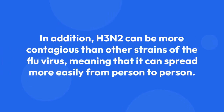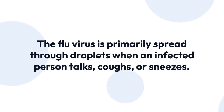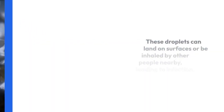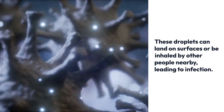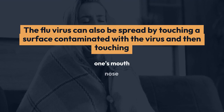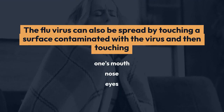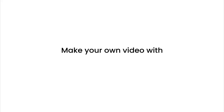In addition, H3N2 can be more contagious than other strains of the flu virus, meaning that it can spread more easily from person to person. This can lead to more widespread outbreaks and higher numbers of cases and hospitalizations. The flu virus is primarily spread through droplets when an infected person talks, coughs, or sneezes. These droplets can land on surfaces or be inhaled by other people nearby, leading to infection. The flu virus can also be spread by touching a surface contaminated with the virus and then touching one's mouth, nose, or eyes.